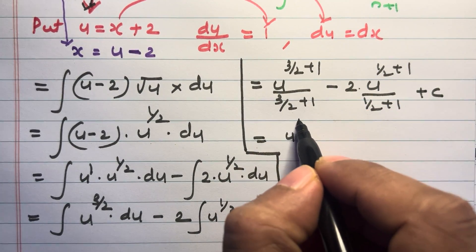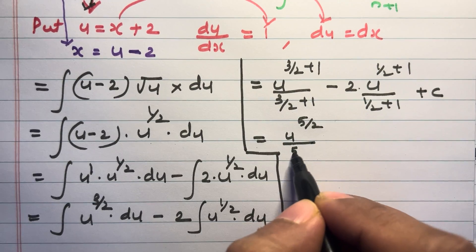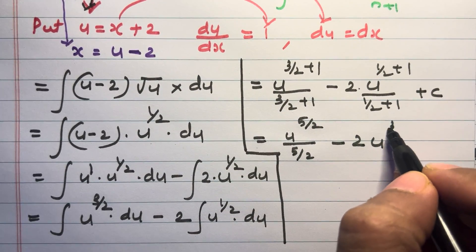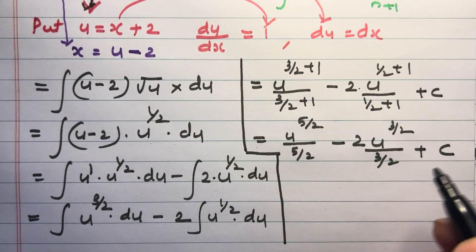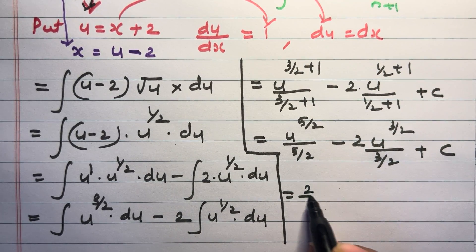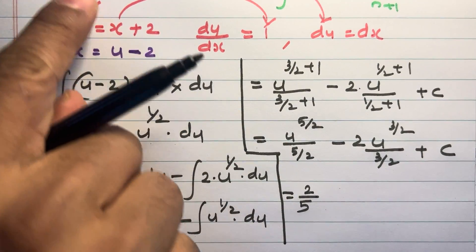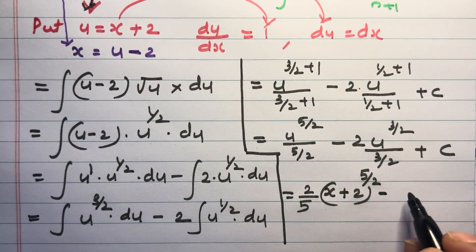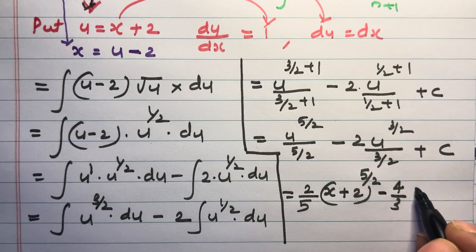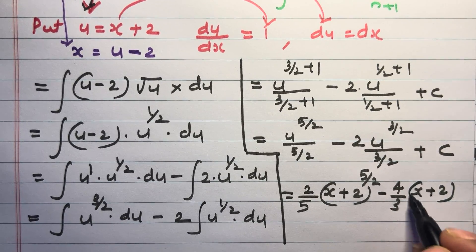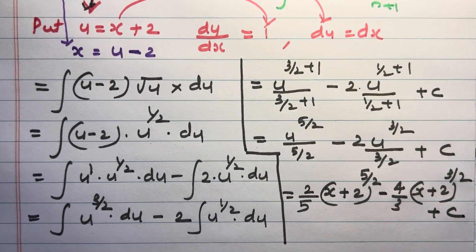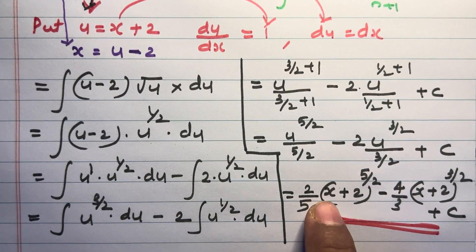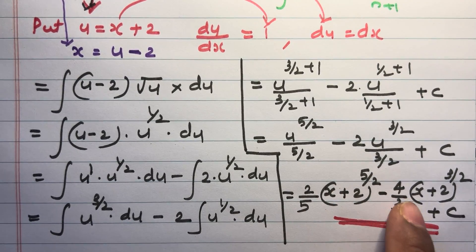That simplifies to u raised to 5 by 2, divided by 5 by 2, minus 2 times u raised to 3 by 2, divided by 3 by 2, plus c. Applying the reciprocal and substituting u equals x plus 2, the final answer is 2 by 5 into x plus 2 all raised to 5 by 2, minus 4 by 3 into x plus 2 all raised to 3 by 2, plus c.